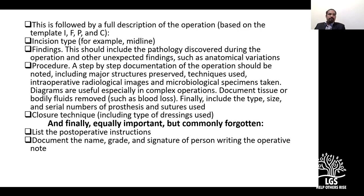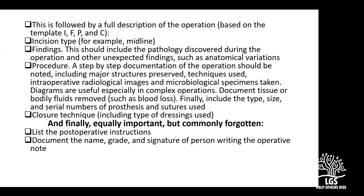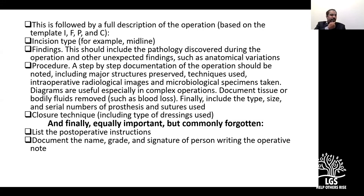I like the IFPC method of writing: Incision, Findings, Procedure, and Closure. Most of us do this subconsciously, but it should be done in a specific way so people understand. Findings are important because they give a lot of information. The procedure should be step by step, though you don't need to describe every individual small artery — you can write 'hemostasis done by sutures.' We also need to document specimens taken, cultures, any prostheses implanted, closure technique, post-op instructions, and signature.